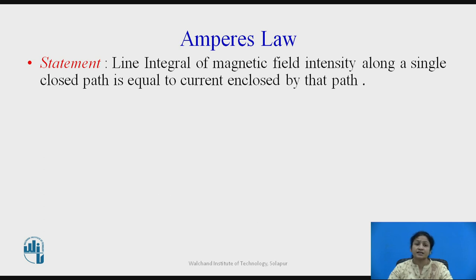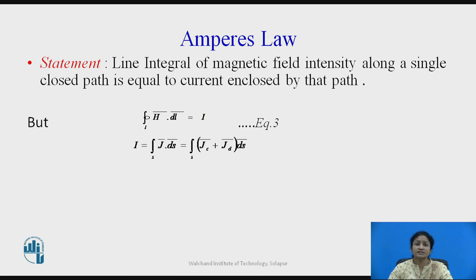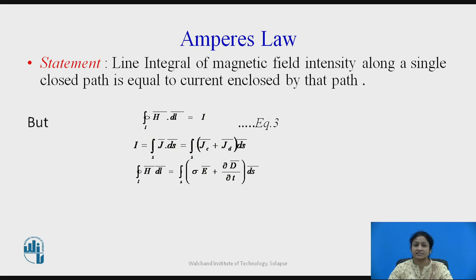Ampere's law states that the line integral of magnetic field intensity along a closed path is always equal to the current enclosed by that path. Mathematically, the closed integral of H·dl equals I. Here, I is the current density over the surface, that is the integral of J·dS. The current density J is due to current from resistance and current from capacitance.